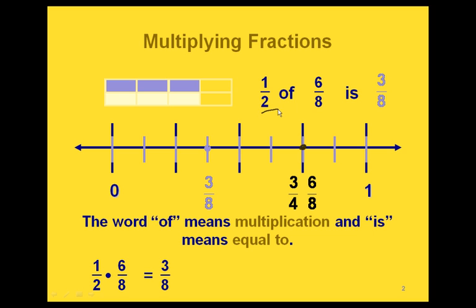When we have a sentence written out like this, we can translate some of these words into operations. The word 'of' means multiplication, and the word 'is' means equal to. So if we're taking 1 half of 6 eighths, we're actually multiplying 1 half times 6 eighths. And since the answer we get is 3 eighths, then this equals 3 eighths.